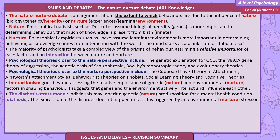Interactionalism goes beyond assessing the relative importance of genetic and environmental factors in shaping behaviour — it suggests that genes and environment actively interact and influence each other. The diathesis-stress model illustrates this: individuals may inherit a genetic predisposition for a mental health condition (diathesis), but the expression of the disorder doesn't happen unless triggered by an environmental stressor.